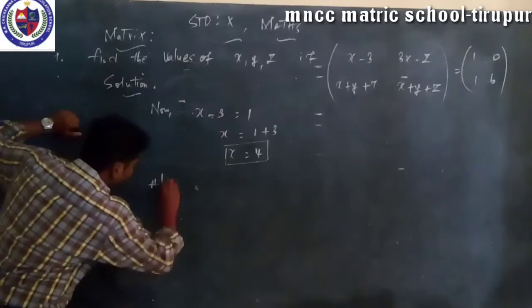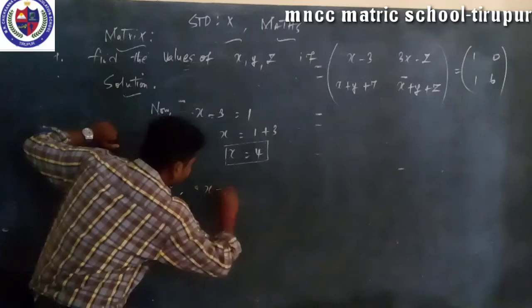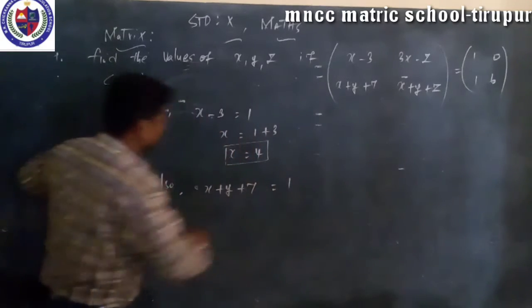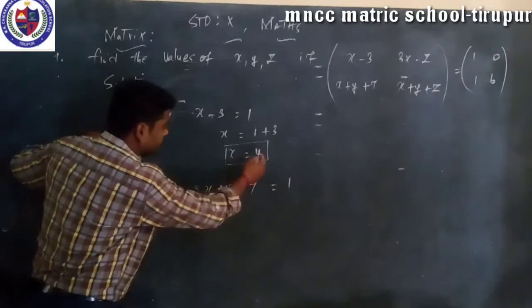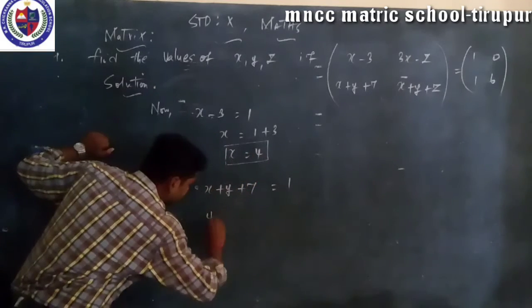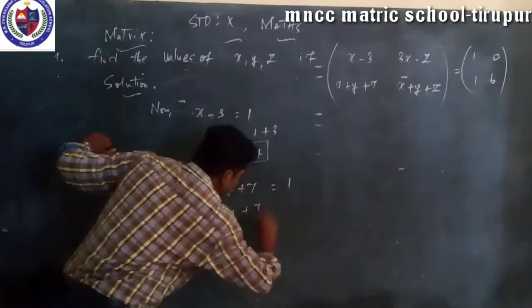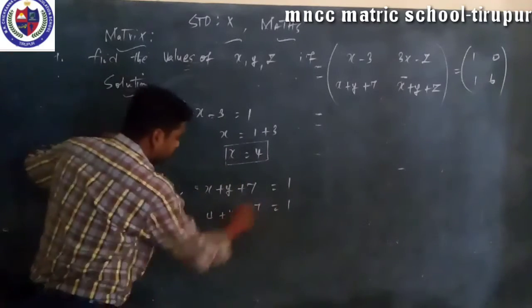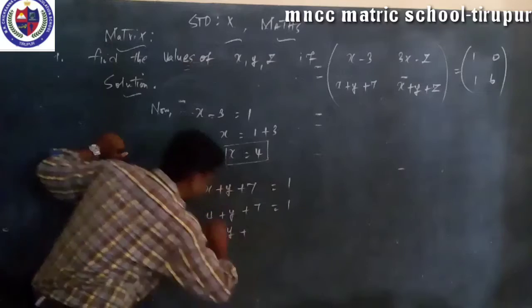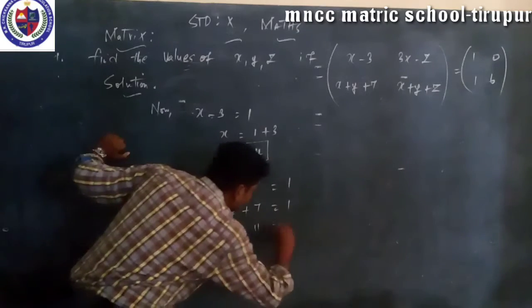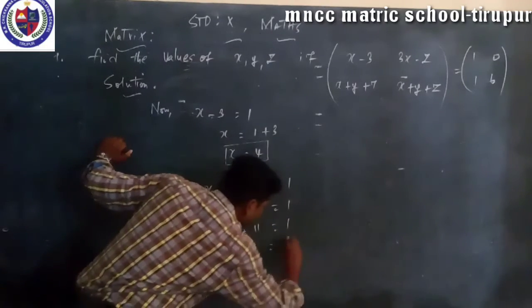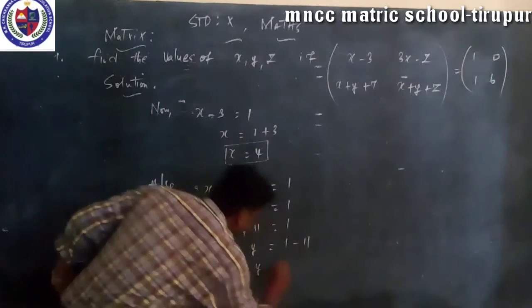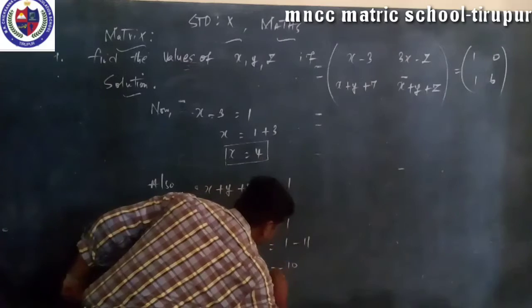Now x plus y plus 7 is equal to 1. So 4 plus y plus 7 is equal to 1, so y is equal to 1 minus 4 minus 7, so y equals minus 10.